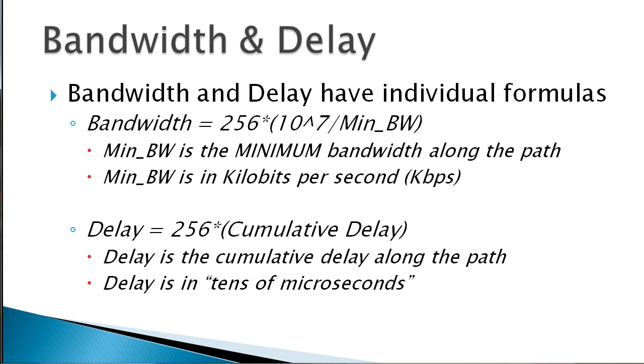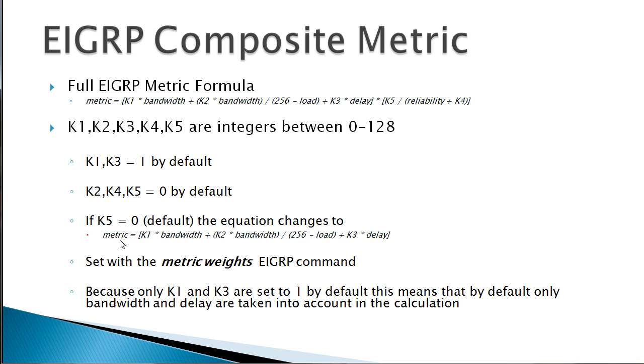So really, if we go back here for a second, when we see bandwidth here, when we see delay over here, really we have to plug in a different equation. Bandwidth: 256 times 10 to the 7th over the minimum bandwidth along the path in kilobits. Delay: 256 times the cumulative delay along the path in tens of microseconds.